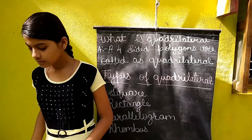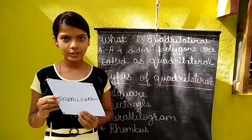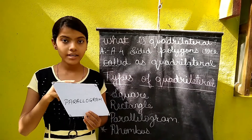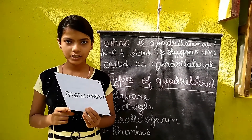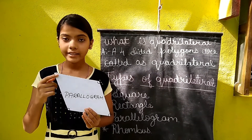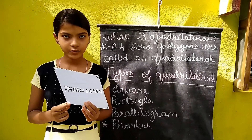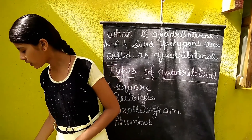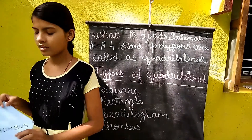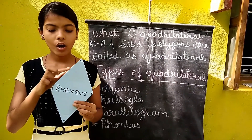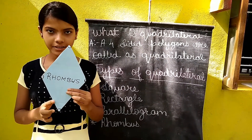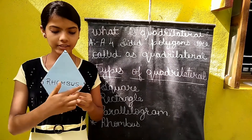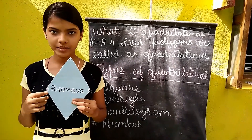The properties of parallelogram are: the sides are equal and angles are not equal to 90 degrees. In rhombus, all the sides are equal and opposite angles are equal.